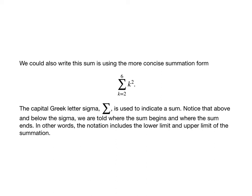So we could write that sum using this notation called sigma notation. We have the sum as k goes from 2 to 6 of k squared. Whenever we see that capital Greek letter sigma in this class, that's used to indicate a sum. Notice above and below that sigma, we see a value for k, that's the lower limit, and an upper limit that tells us where to start and where to stop that summation.